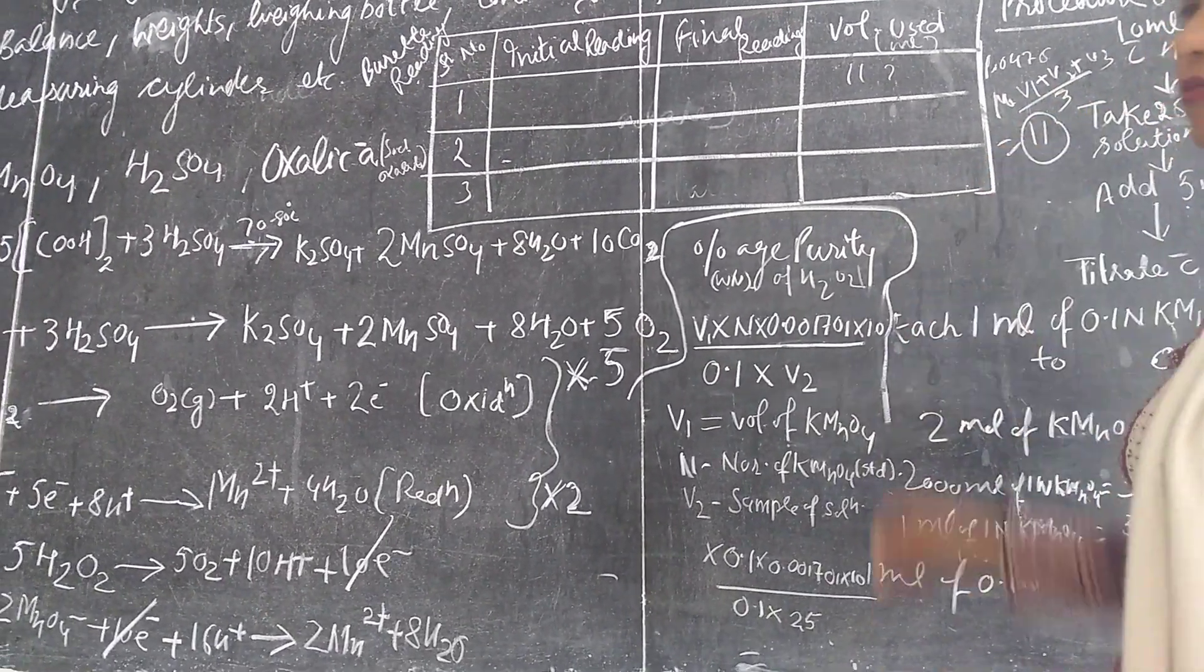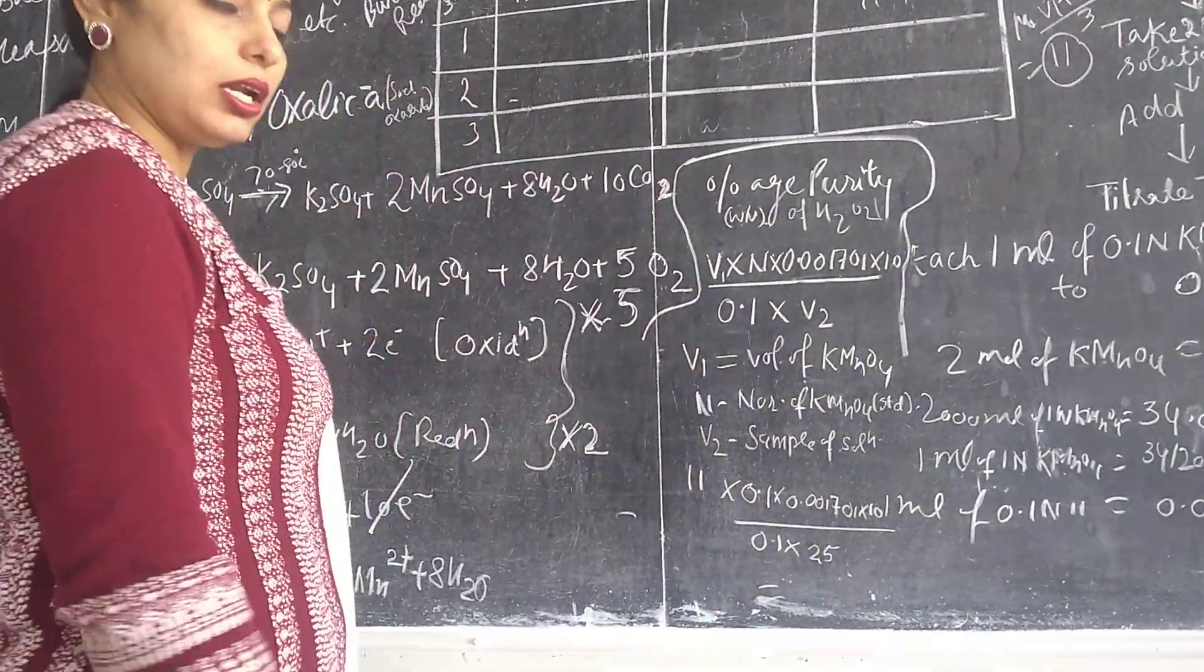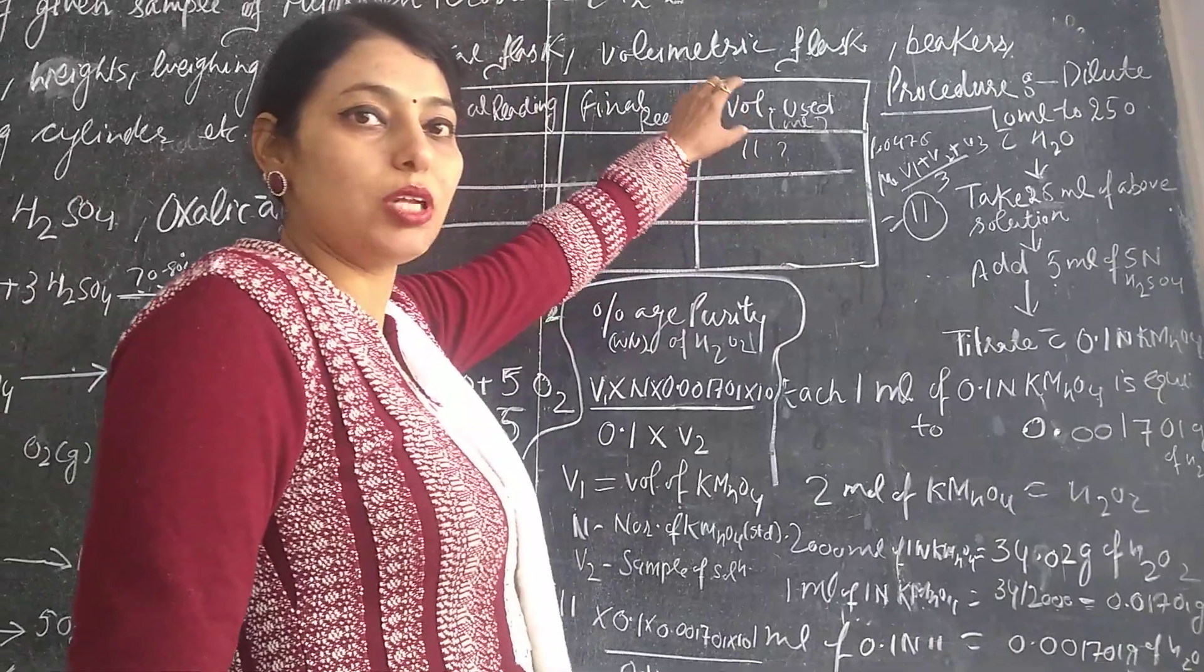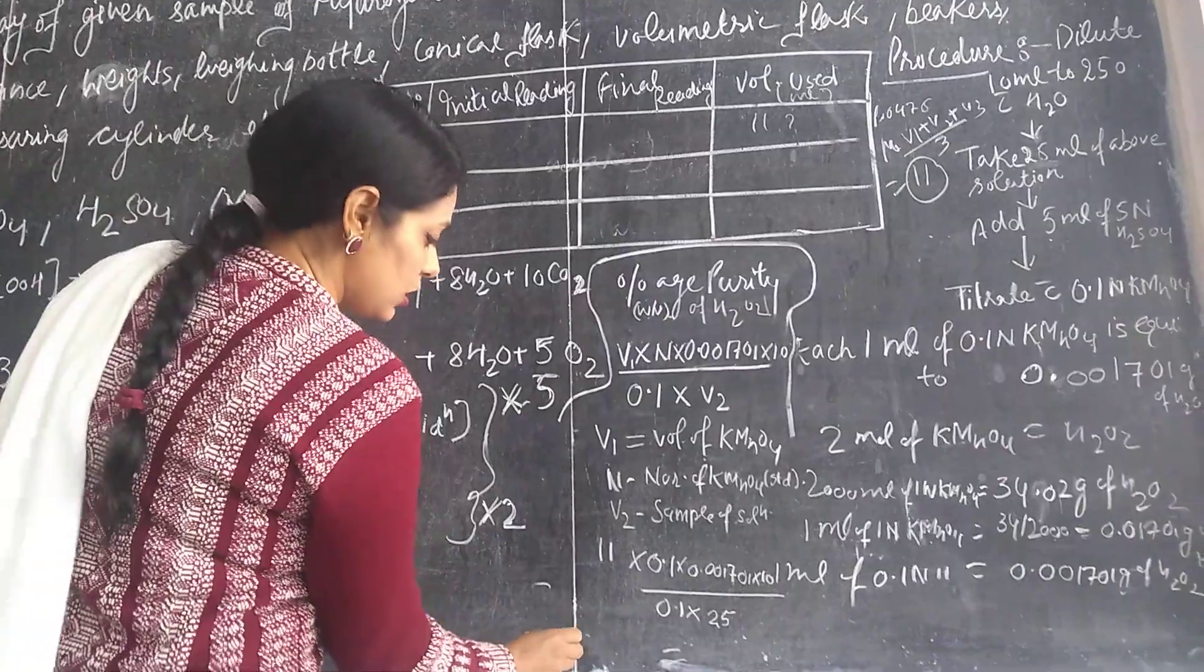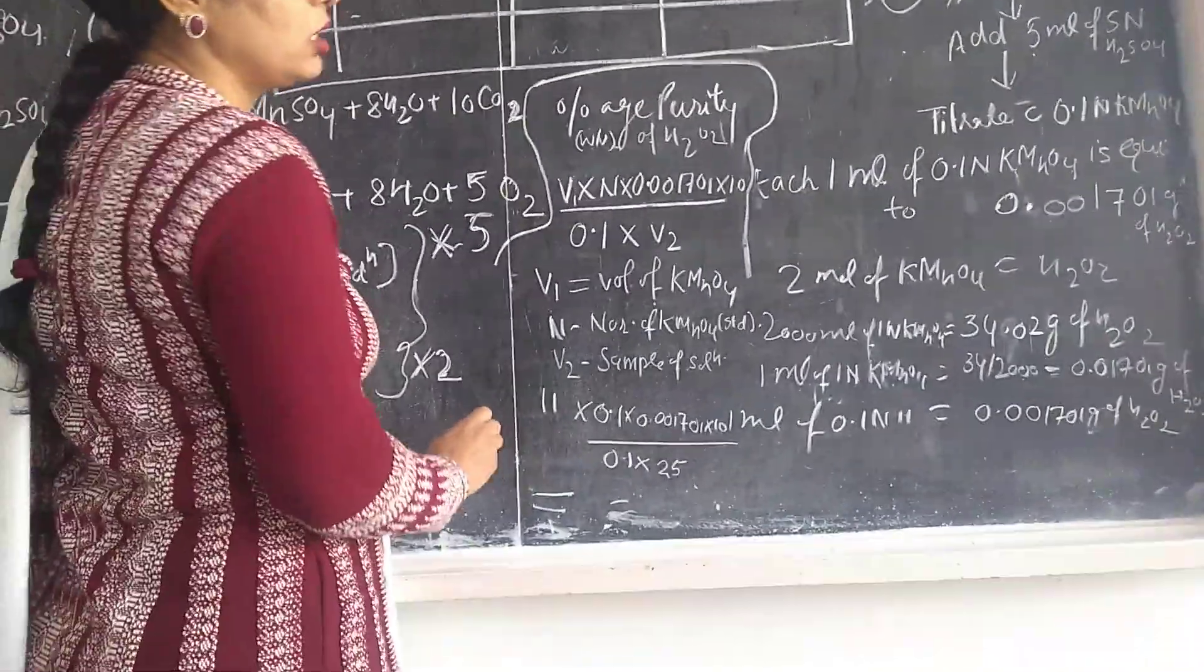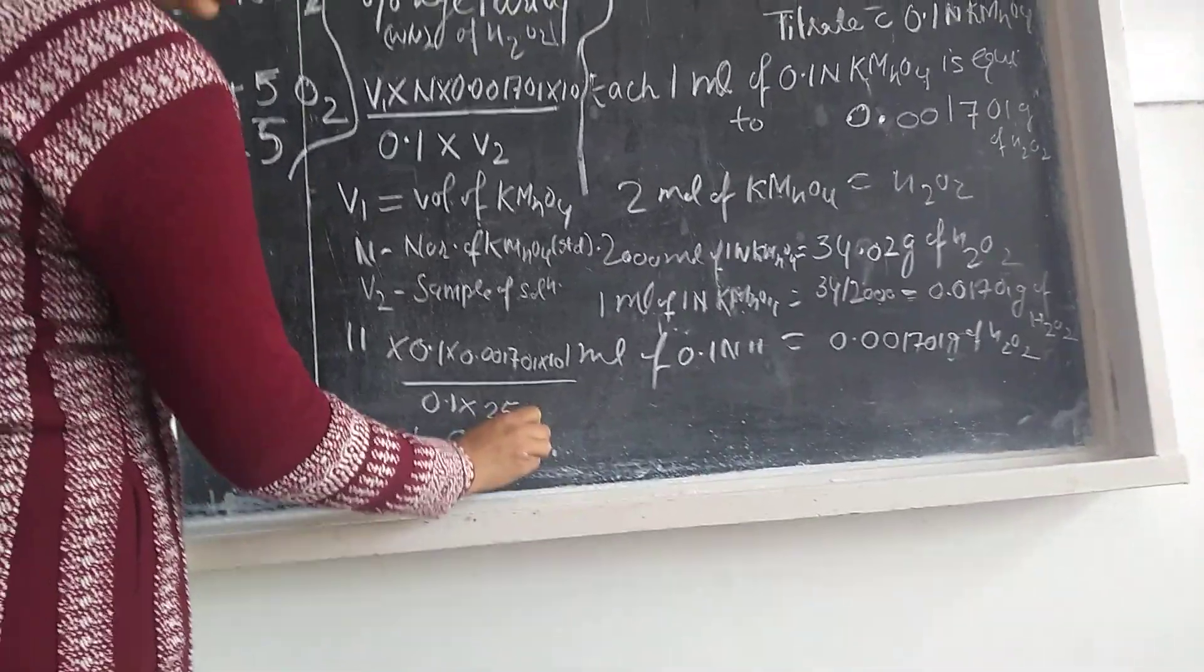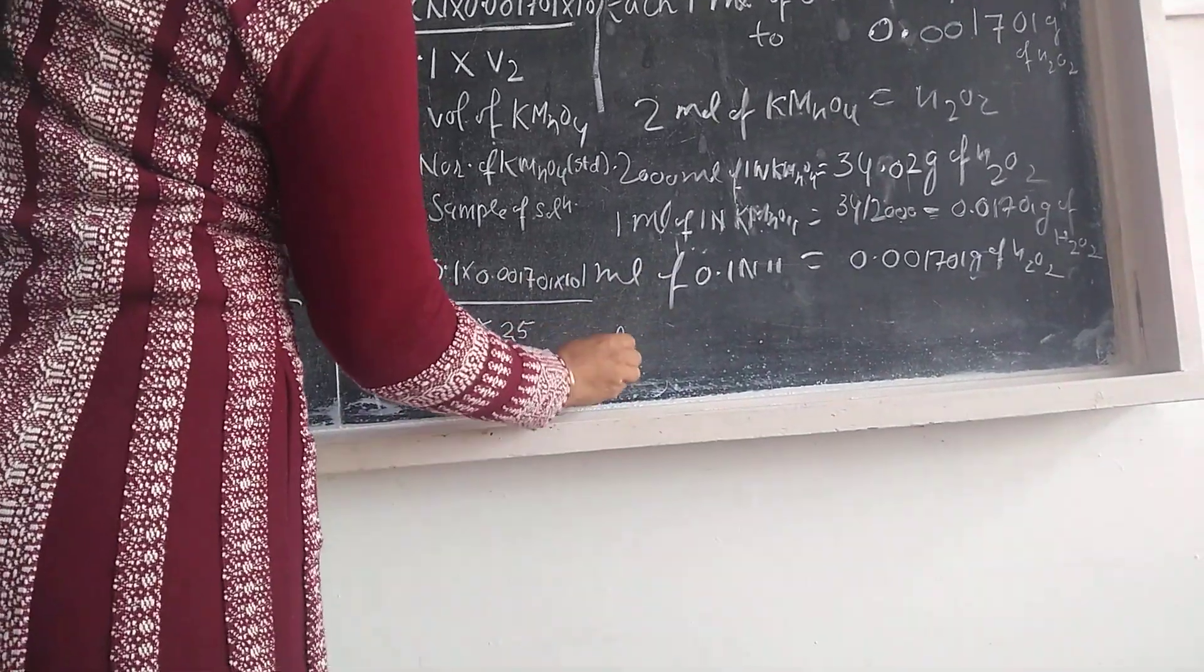Suppose when you take readings and you get volumes V1, V2, V3, when you divide by 3, suppose you get 11 as average. So if I have 11, I put it in V1. This is just an example students, you have to perform by your own.